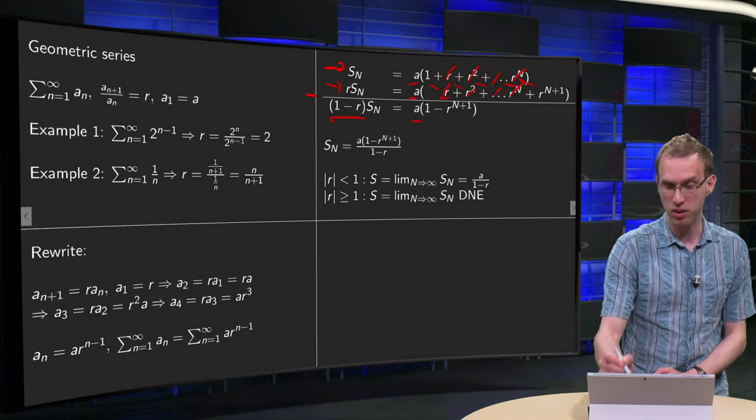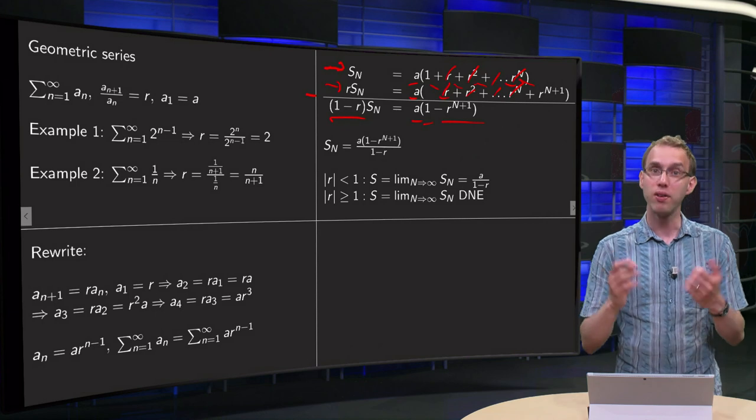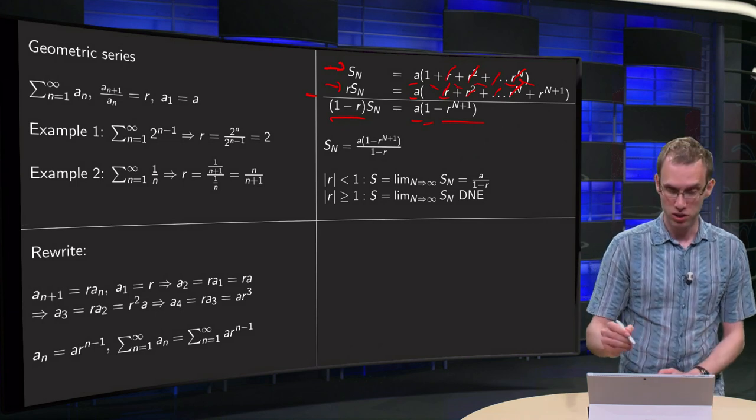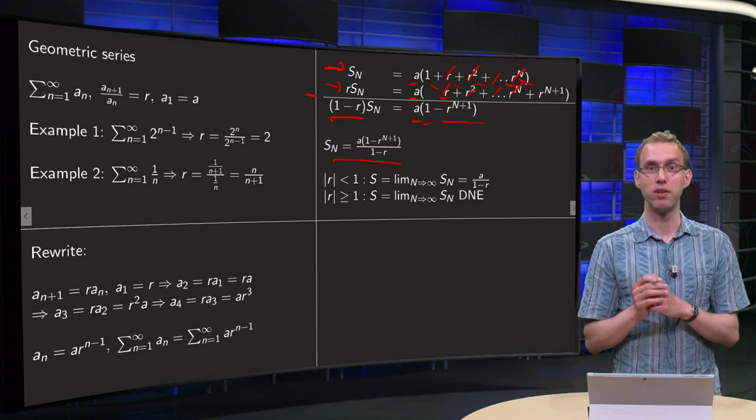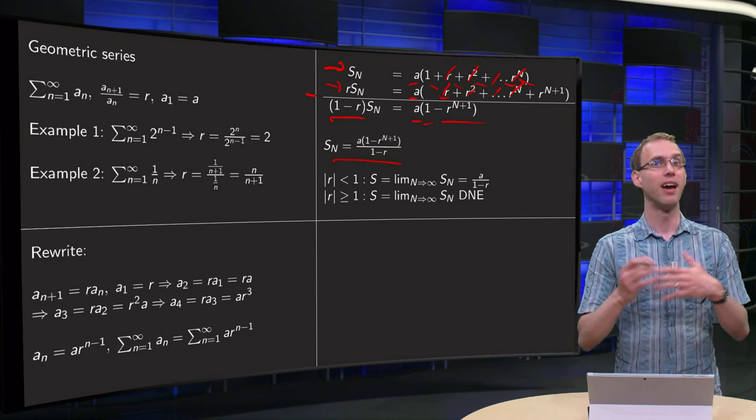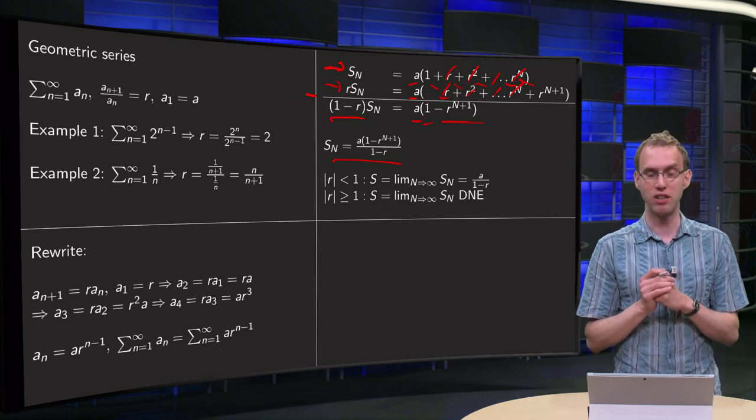So you get on the right-hand side still the a of course, and the first minus the last term. And we can solve for S_N, that's just a times (1 - r^{n+1}) divided by (1 - r). And there we are, now we have our nth partial sum by this nice little trick.